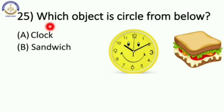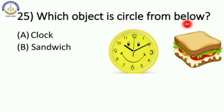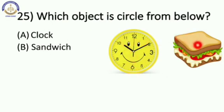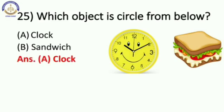Now: which object is a circle from below — clock or sandwich? Yeh dono mein se konsa circle hai? Obviously clock. Very good. So our answer is A, clock.